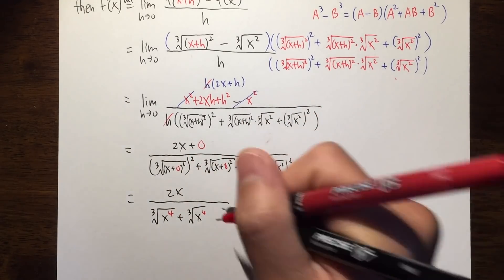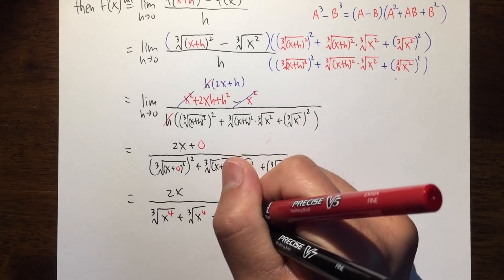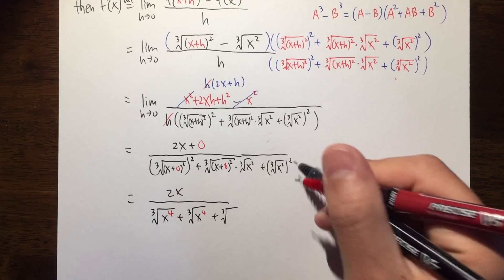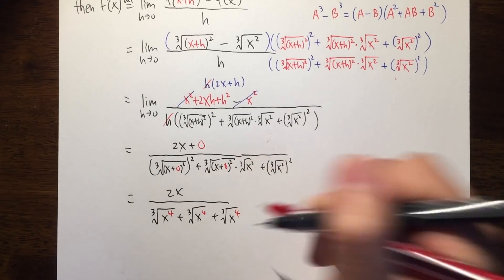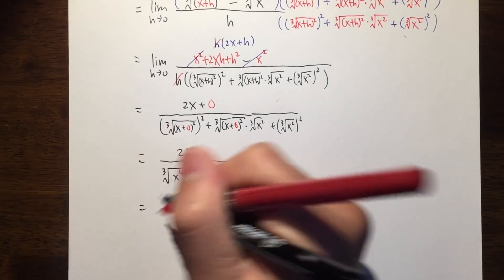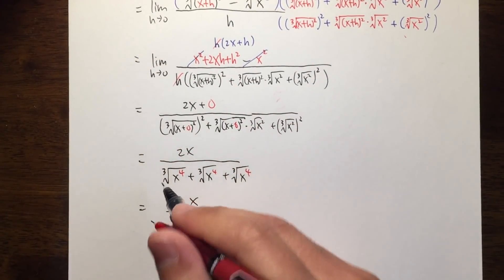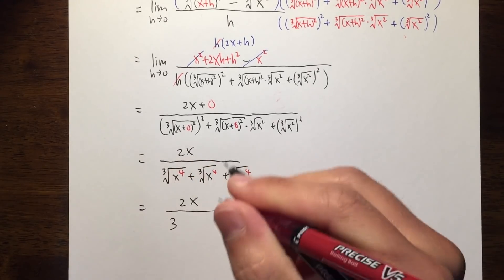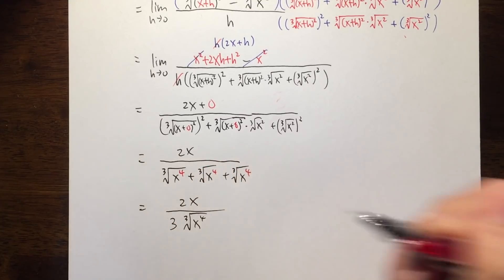And then lastly, you have this — once again, cube root, and then x squared squared — you can just fix the exponent, you get x to the fourth power. So it's nothing but just 2x on the top, over this plus this plus that, so you sum them together: 3 times the cube root of x to the fourth power.